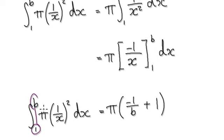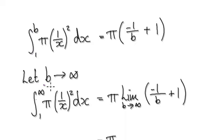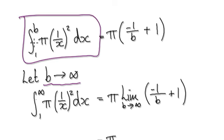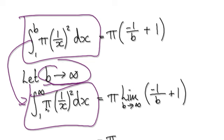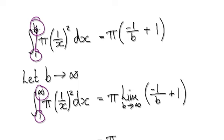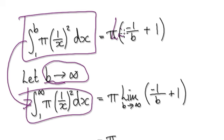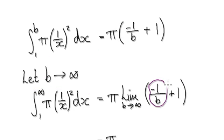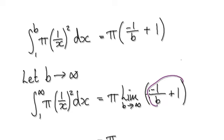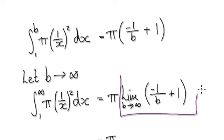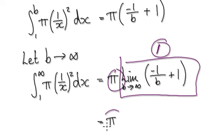This is us integrating from 1 to b. Now allow b to move towards infinity — you're really integrating from 1 to infinity as opposed to 1 to b. Take the limit as b heads towards infinity. As b heads towards infinity, 1 divided by something very very big goes towards zero, so this whole block becomes 1.